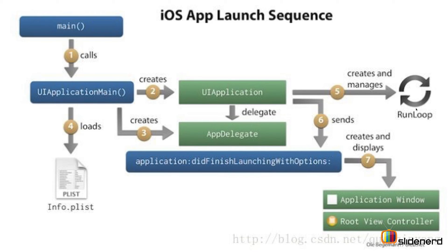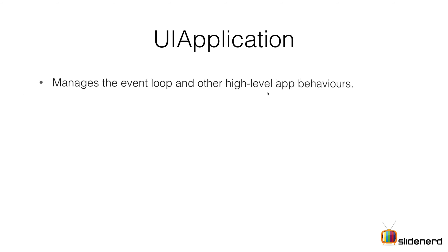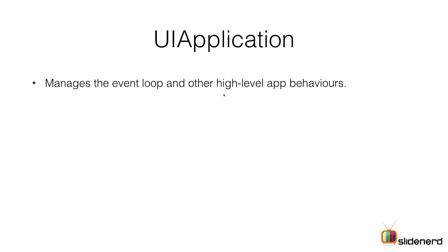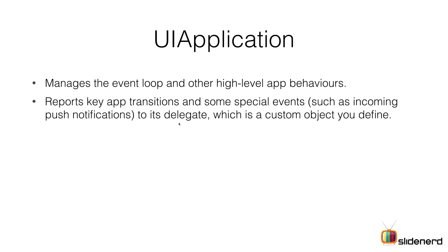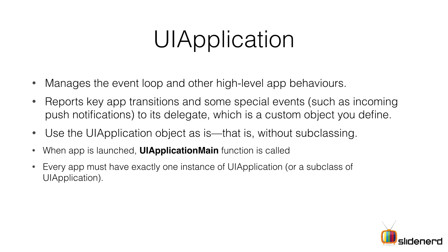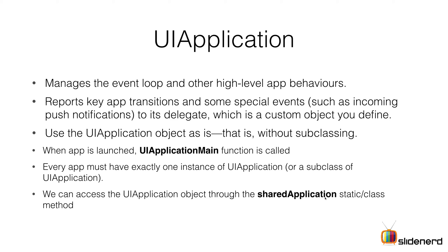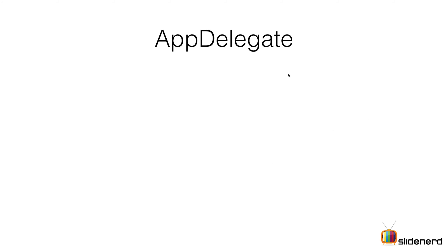Let's take a closer look at the UIApplication class. If you're not sure what it does, go to Google and type UIApplication documentation. It manages the event loop and other high-level app behaviors — the event loop is basically what the user does on the screen. It also handles transitions like incoming push notifications and notifies your app delegate when such events happen. Apple's documentation says don't subclass UIApplication. UIApplicationMain is called immediately when the app is launched, there should be only one UIApplication in your app, and you can access it through the sharedApplication class method.